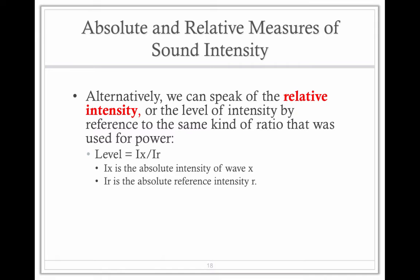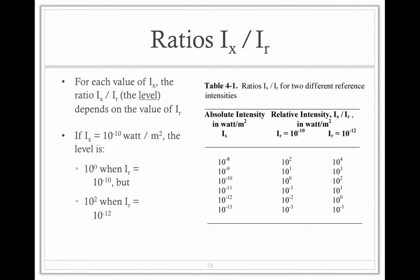Alternatively, we can speak of a relative intensity or the level of intensity by reference to some kind of ratio. Level is a relative value. We have an absolute compared to an absolute reference, IX over IR. Over here, you'll see how the values change, how the relative values change based on the reference.